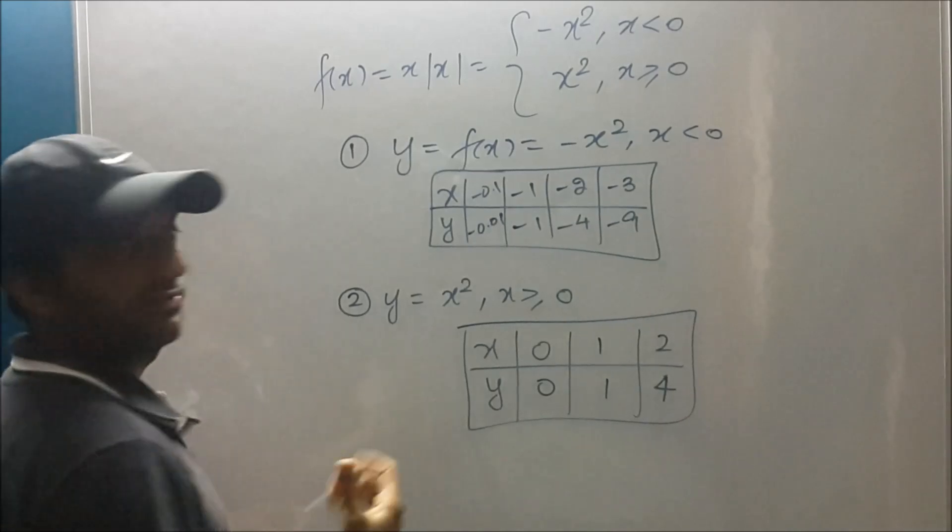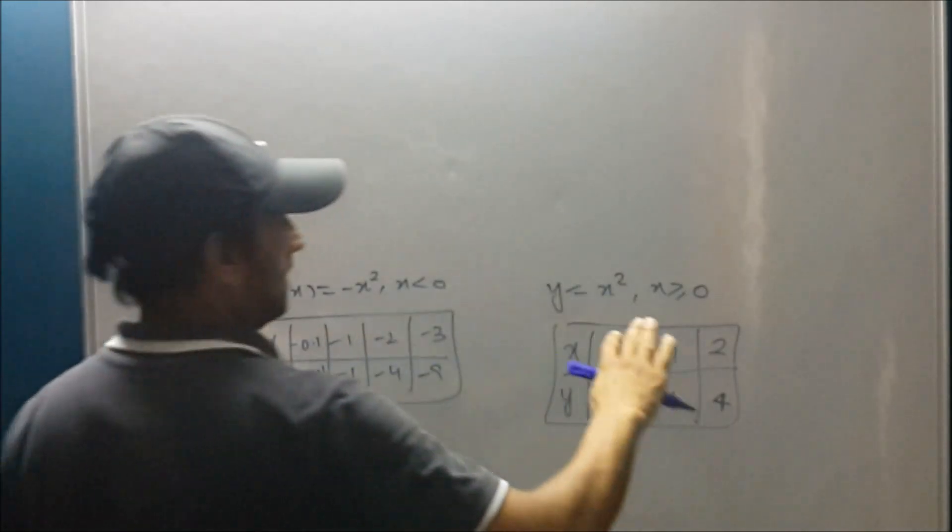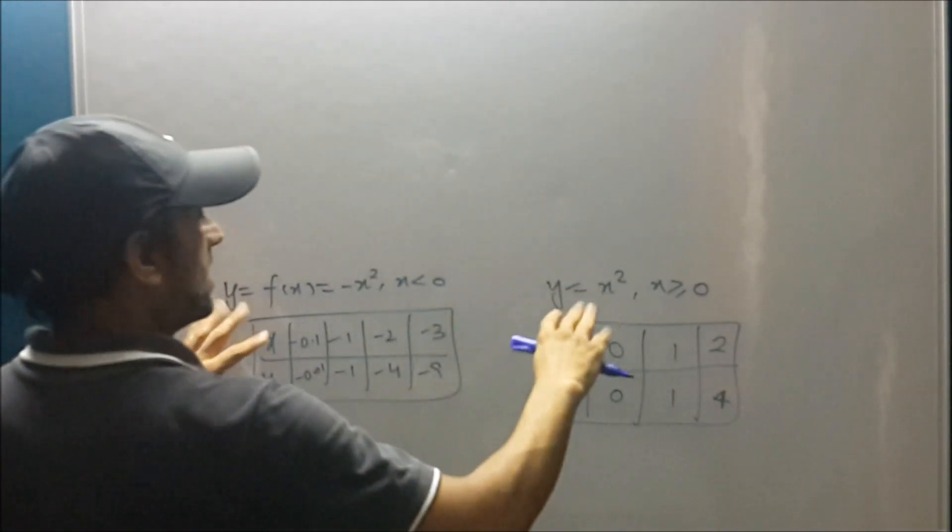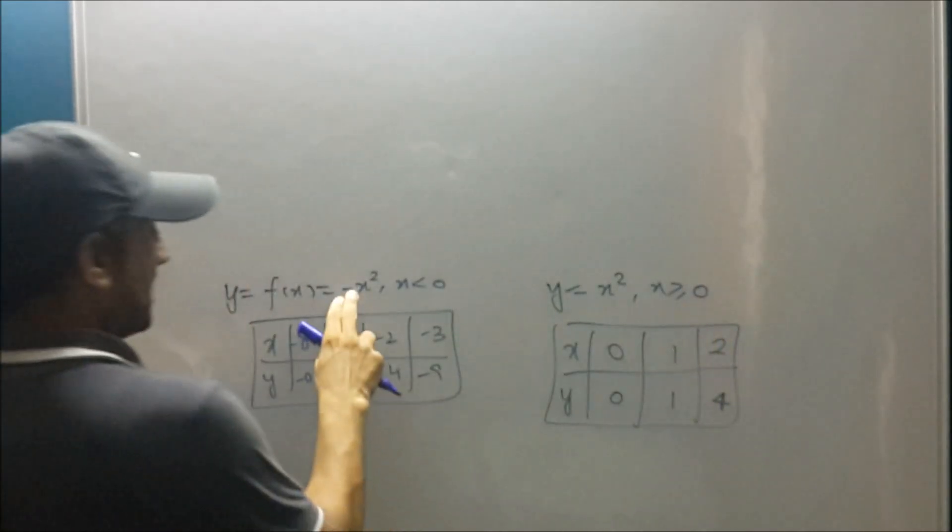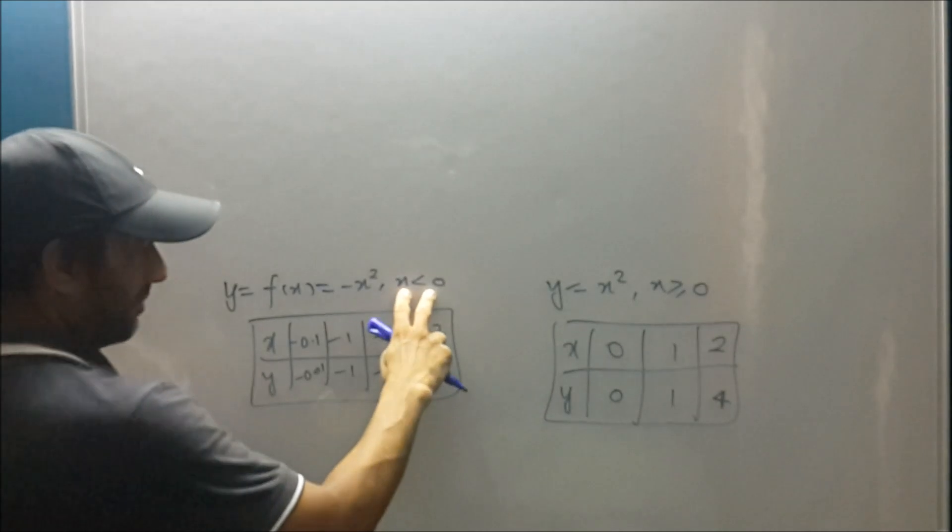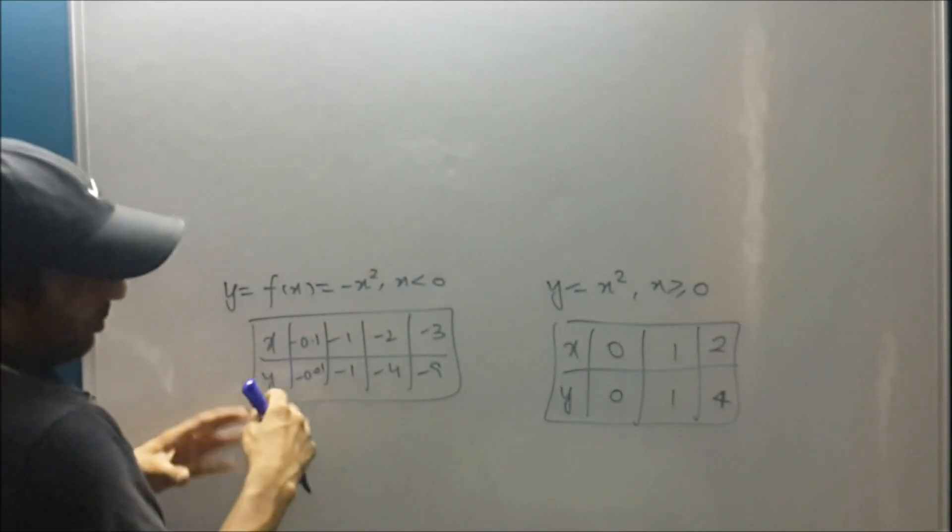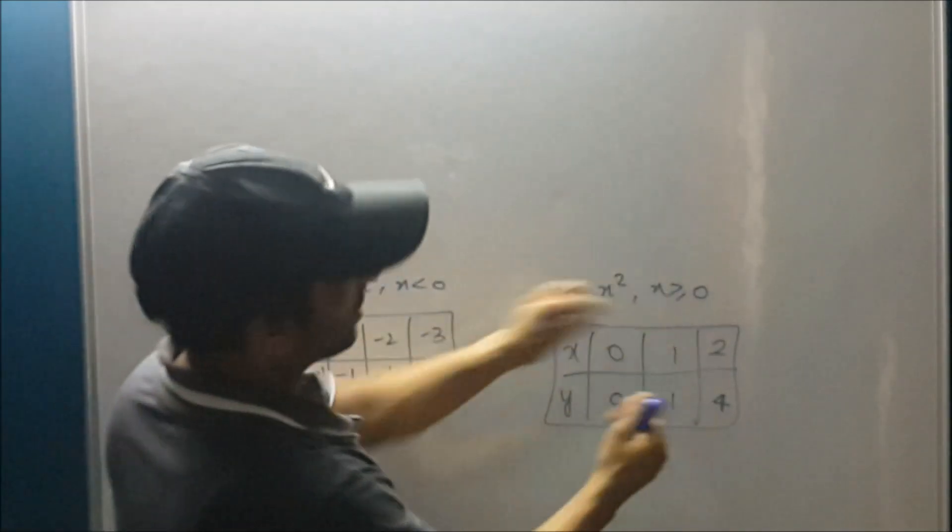These are the tables and using these tables we know that this is the upward parabola for non-negative numbers and a downward parabola for a negative number. So clearly the input and output is in the third quadrant and this is in the first quadrant.